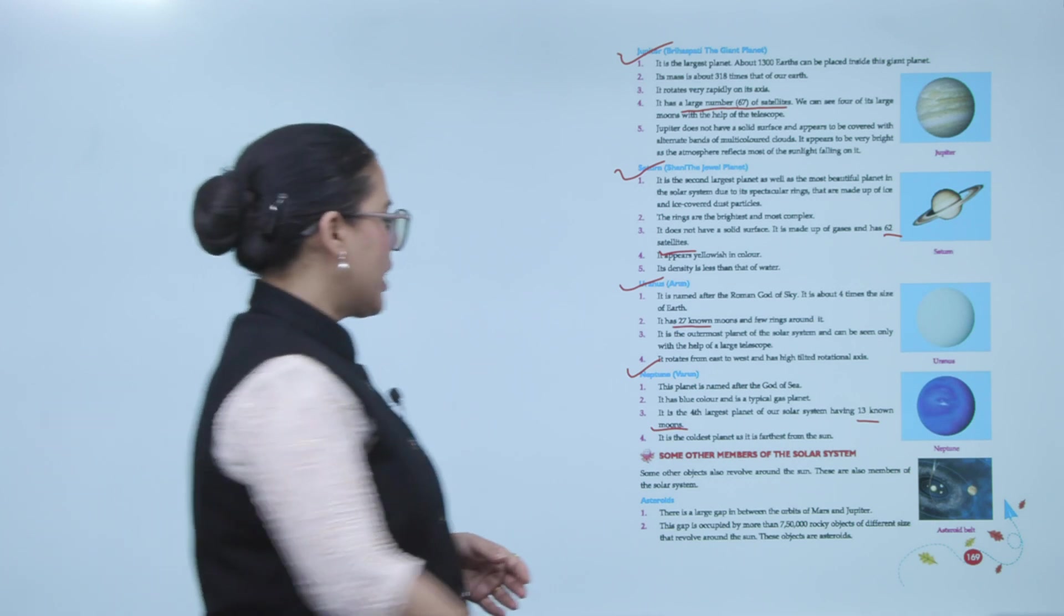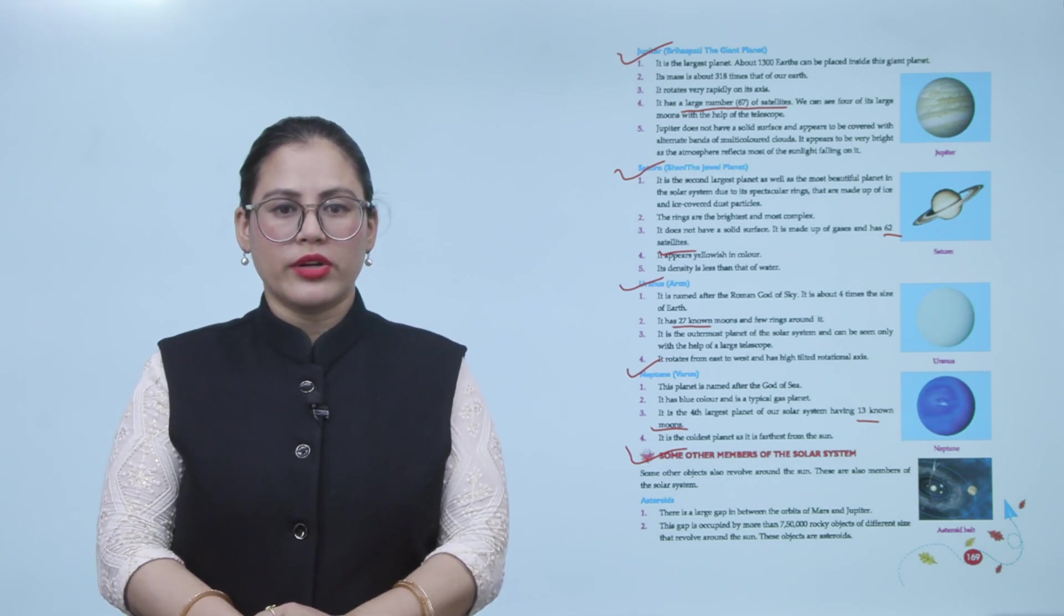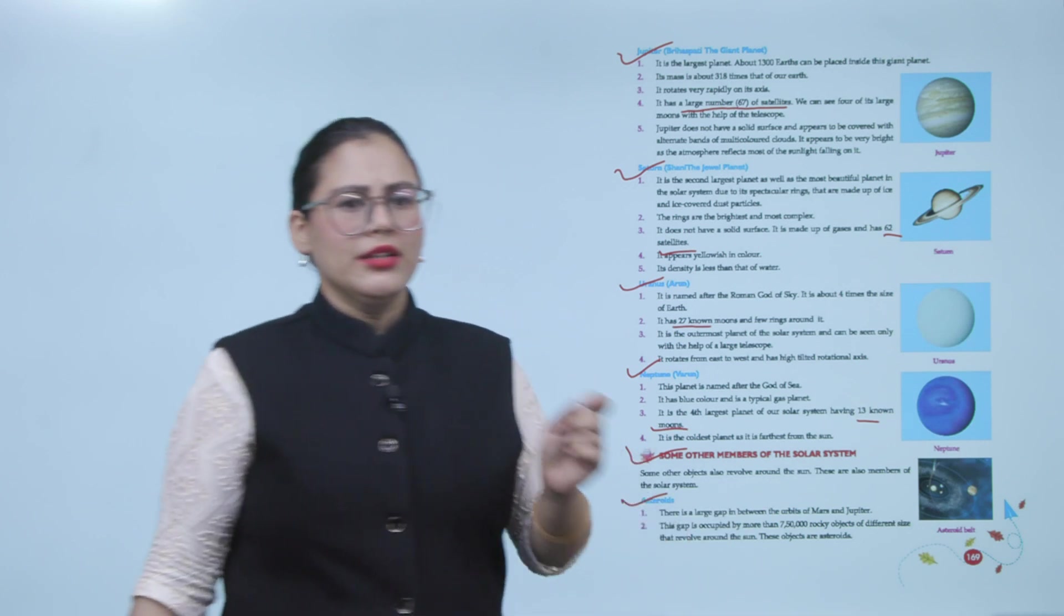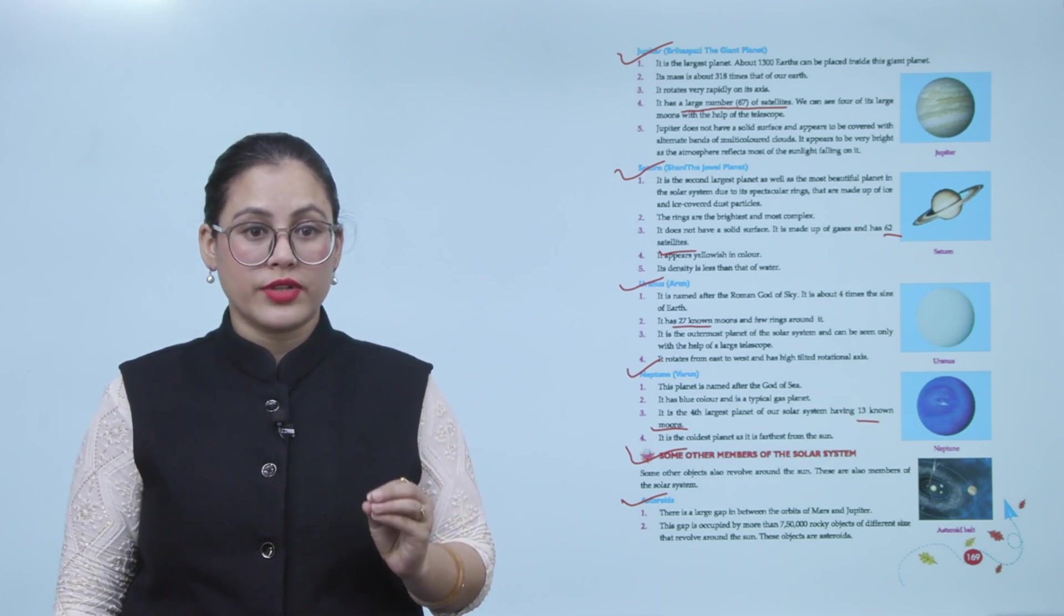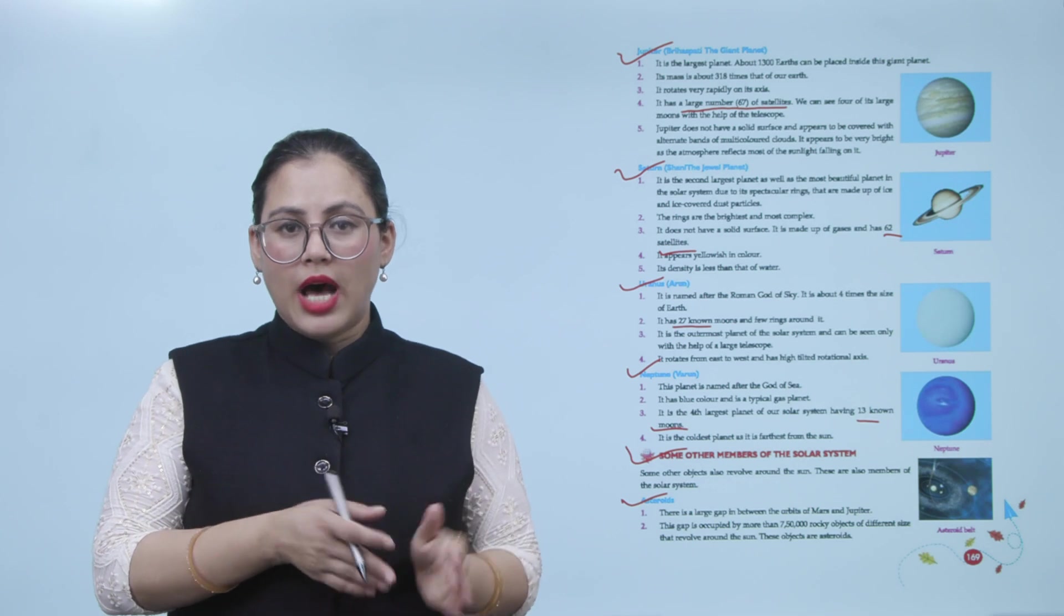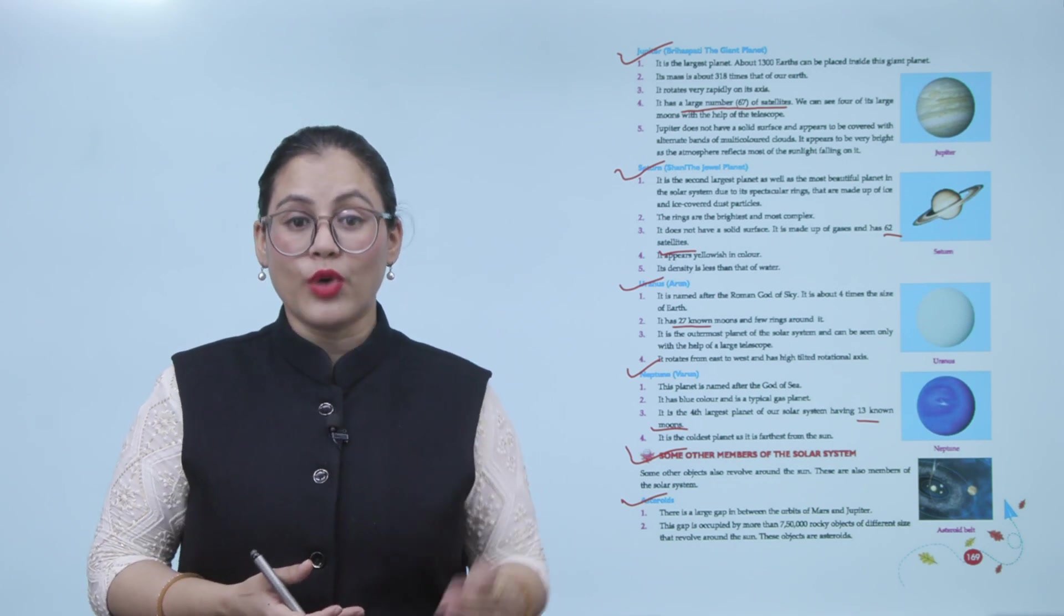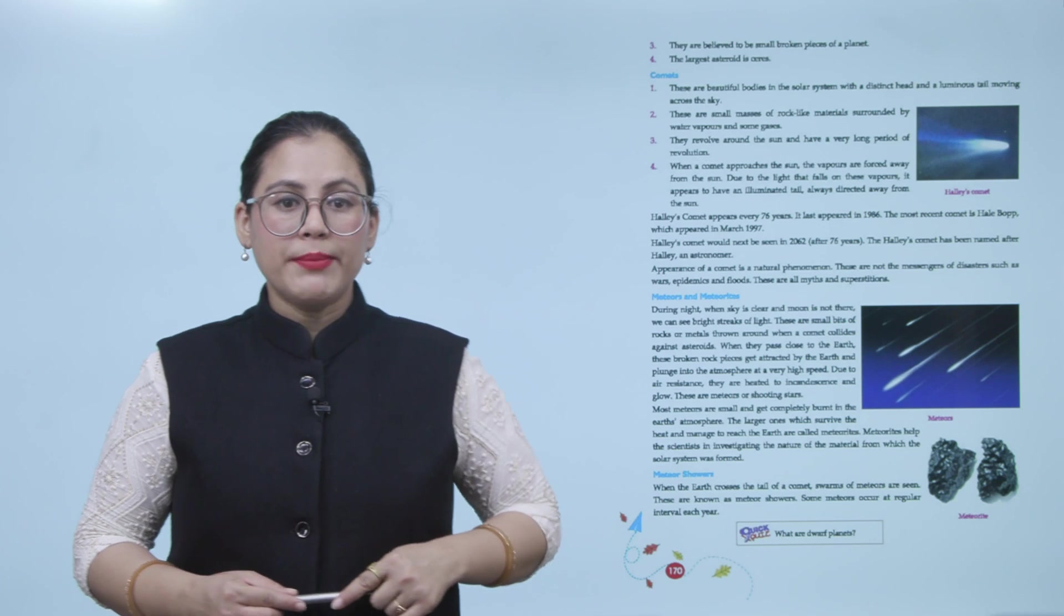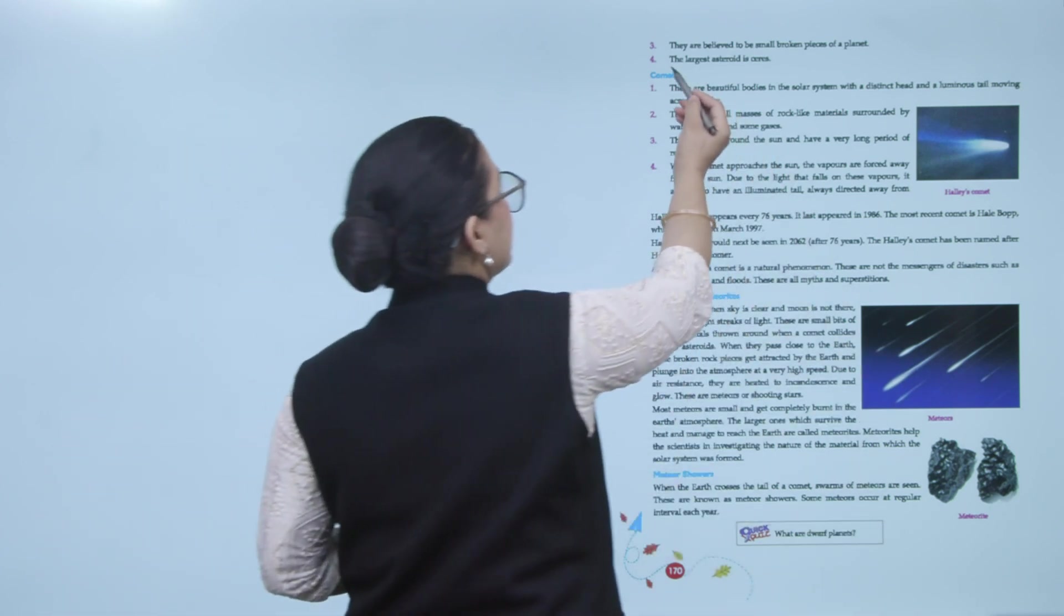Some other members of the solar system. In addition to planets and satellites, some other objects also revolve around the sun. These are also members of the solar system. Asteroids. There is a large gap in between the orbits of Mars and Jupiter. Number two: This gap is occupied by more than 750,000 rocky objects of different sizes that revolve around the sun. These objects are asteroids. This gap is occupied by rocky objects of different sizes which revolve around the sun, and these objects are called asteroids. They are believed to be small broken pieces of a planet. The largest asteroid is Ceres.